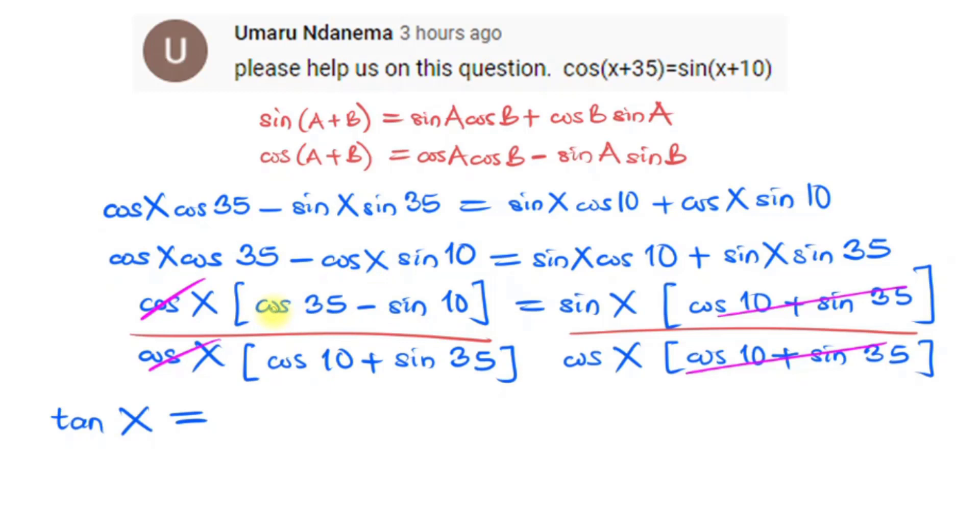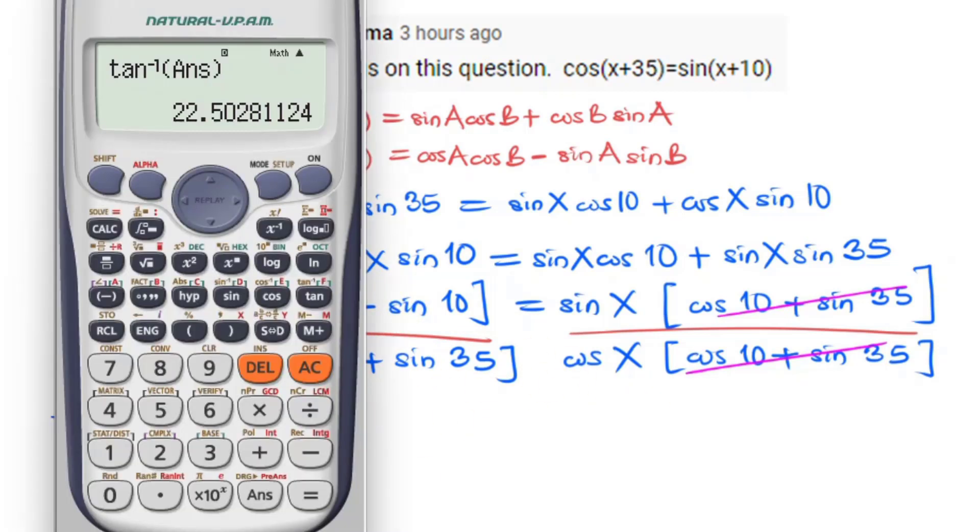So I can just say I want to solve this with my calculator now. So I have cos, okay let me just put the fraction so that I will just do it straight. Cos(35), I can close that bracket, minus sin(10). So let me also close that bracket and then move to the new denominator where I have cos(10) + sin(35). Cos(10) + sin(35), so I have cos(10), I can close that bracket, plus sin(35).